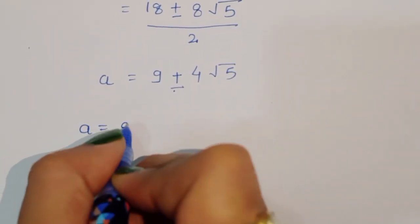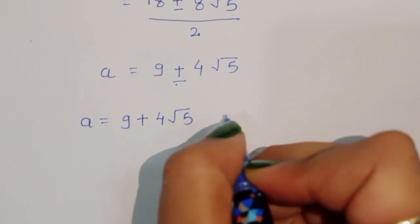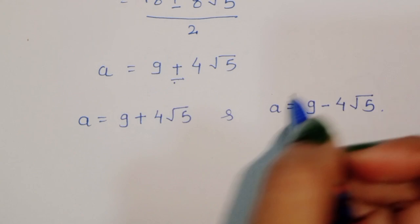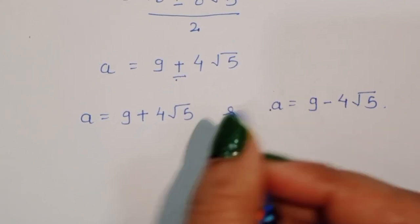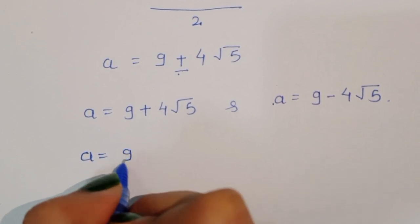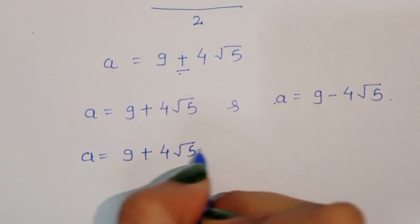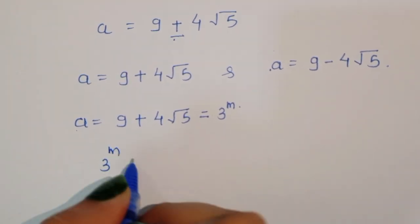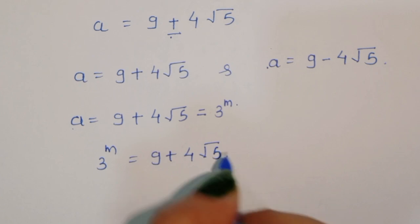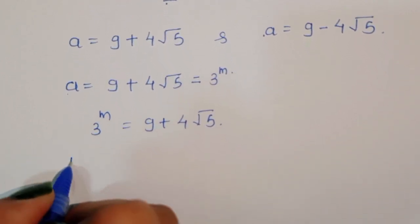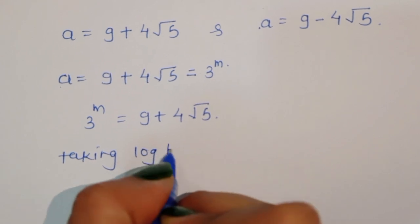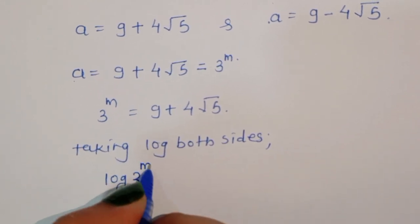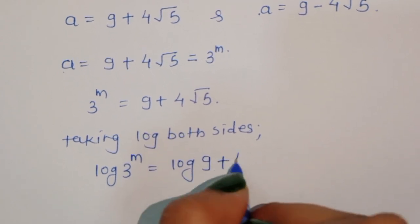We have two values. Since we considered a is equal to 3 power m, for the first case: 3 power m is equal to 9 plus 4 square root of 5. Taking log on both sides, we get log of 3 power m is equal to log of 9 plus 4 square root of 5.